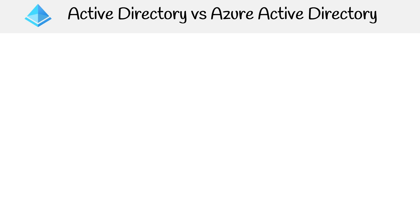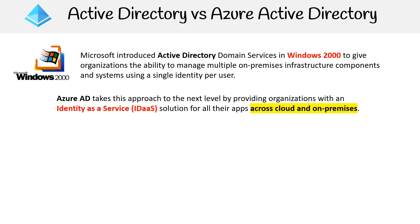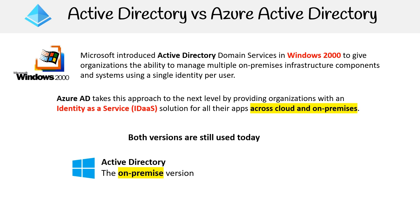Let's look at the comparison between Active Directory versus Azure Active Directory, because they're not the same thing. Active Directory has been around for quite a long time — Microsoft introduced Active Directory Domain Services in Windows 2000 to give organizations the ability to manage multiple on-premises infrastructure components using a single identity per user. Azure AD takes this to the next level by providing an identity-as-a-service solution for apps across cloud and on-premises. Both versions are still used today: Active Directory for on-premises, and Azure AD as the cloud version.